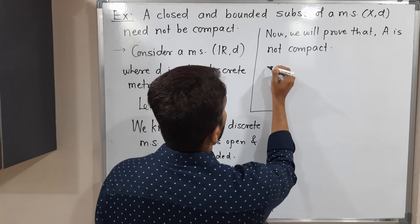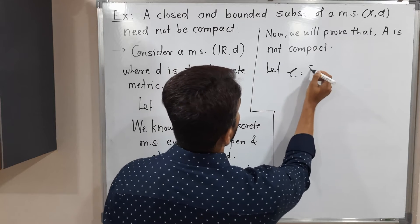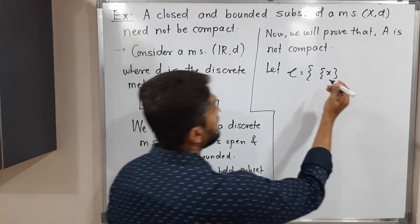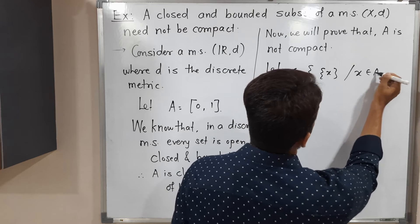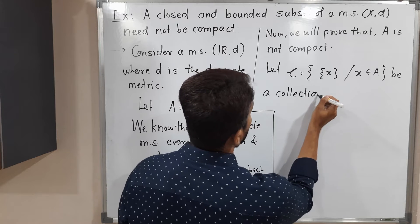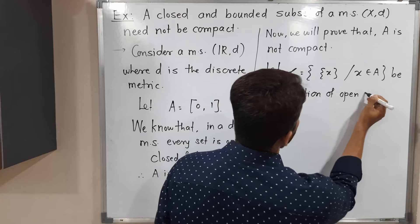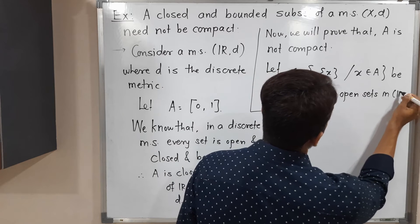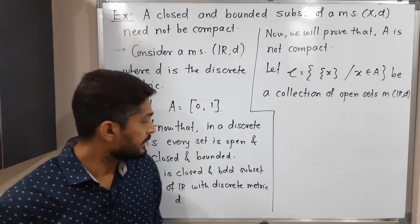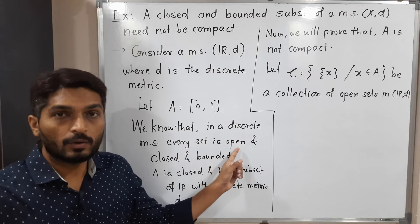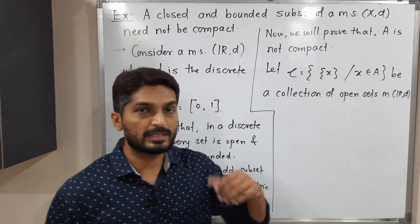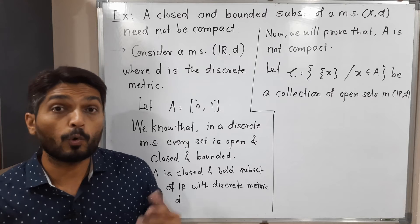Let script C be a collection of singleton sets {x} for each x belonging to A — a collection of open sets in R. Since we know that in a discrete metric every set is open, closed, and bounded, the singleton set is also open. So this is a collection of open sets in R.